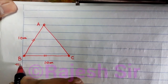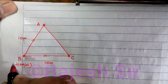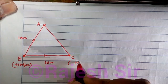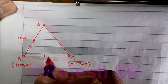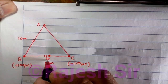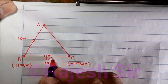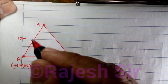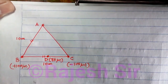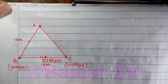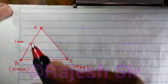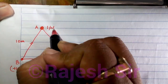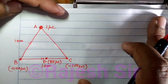B has a 100 microcoulomb charge. C has a minus 100 microcoulomb charge, whereas point D, which is the midpoint, carries a 75 microcoulomb charge. Additionally, there is a charge of 1 microcoulomb placed at A.